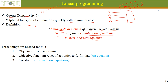The definition of Linear Programming: it is a mathematical method of analysis which finds the best combination of activities to meet a certain objective. In farming, our objective is generally to maximize profits. So it is a mathematical technique by which we can find the best set of crop enterprises a farmer should follow to get maximum profits.